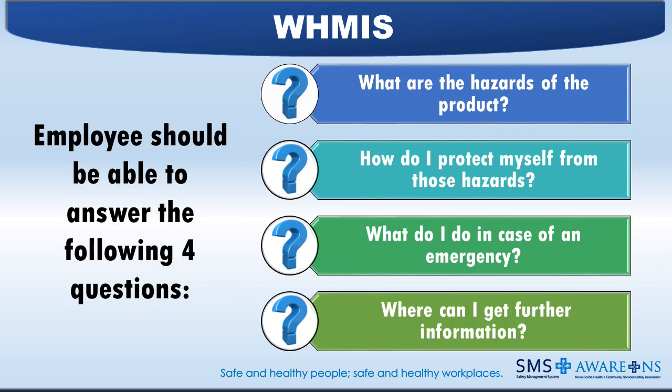WHMIS education is measured by the ability of workers to demonstrate safe work procedures and the knowledge of why these procedures are required. If you cannot answer all four of these questions, you should ask your supervisor for more information as soon as possible: What are the hazards of the products I may be working with or near? How do I protect myself from these hazards? What do I do in case of an emergency? And where can I get further information? Most of these answers can be found on the labels or the safety data sheet.